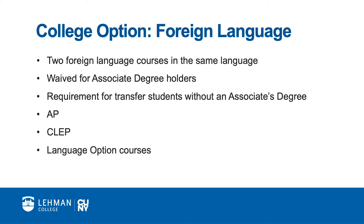This requirement may be modified if you are transferring from a community college. Students who transfer with a completed associate's degree that is recognized by CUNY are waived from the entire foreign language requirement. Students who transfer 30 or more credits from a community college but do not have a completed associate's degree may need to complete fewer foreign language courses. Please consult an academic advisor to review your record and provide further details. It is also important to note that a minimum score of 3 on an advanced placement test in foreign language will satisfy one of the two required foreign language courses.